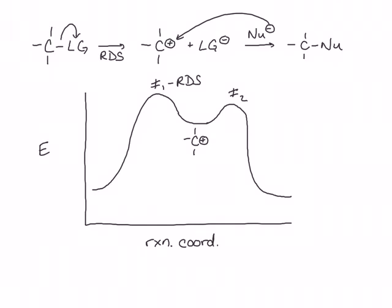Remember that it's the rate-determining step that determines how quickly the overall reaction occurs. The reaction cannot occur any faster than its rate-determining step. So anything we can do to lower the activation energy of the rate-determining step will speed up the overall reaction. We can speed up the rate-determining step by lowering the energy of transition state 1.